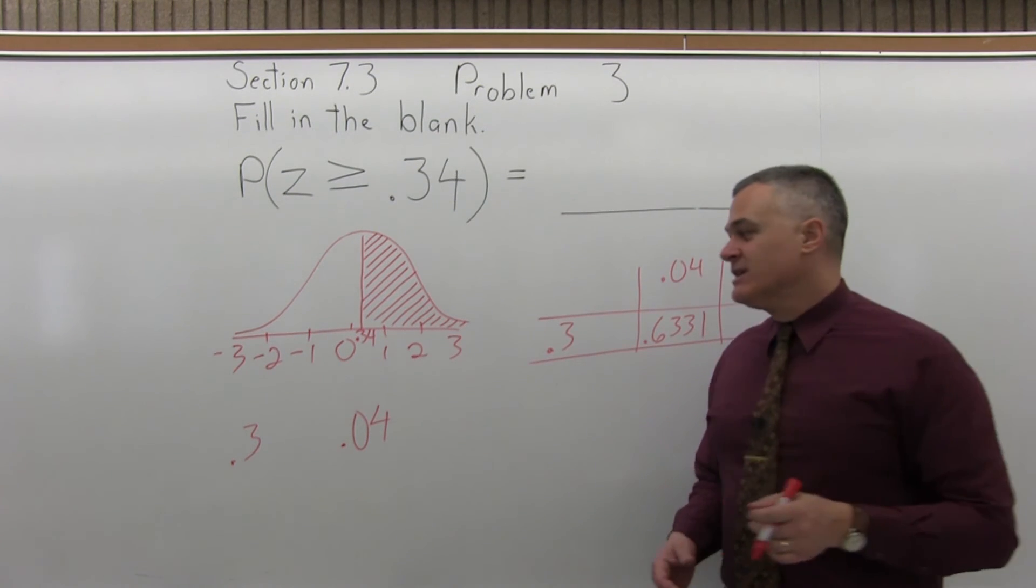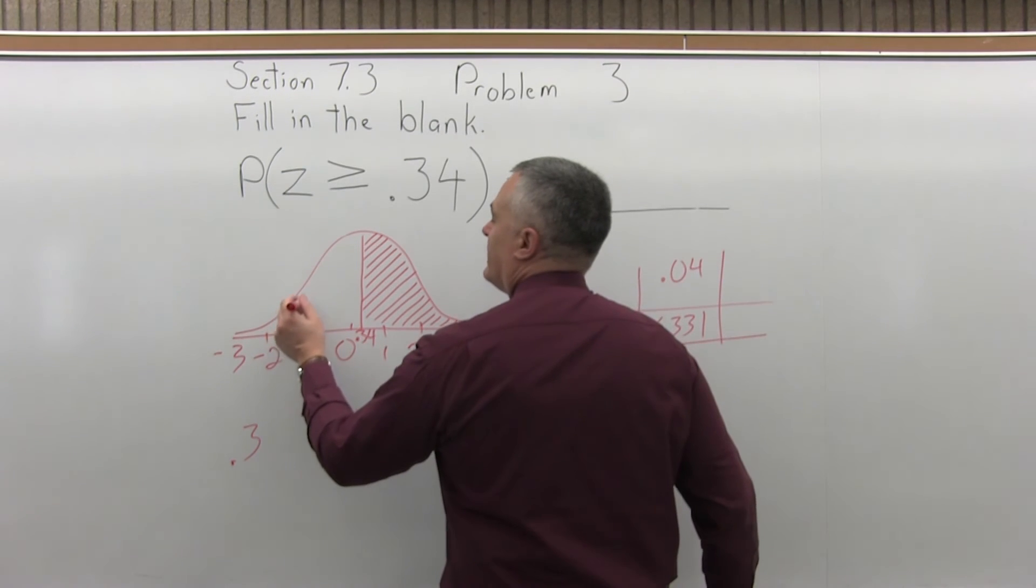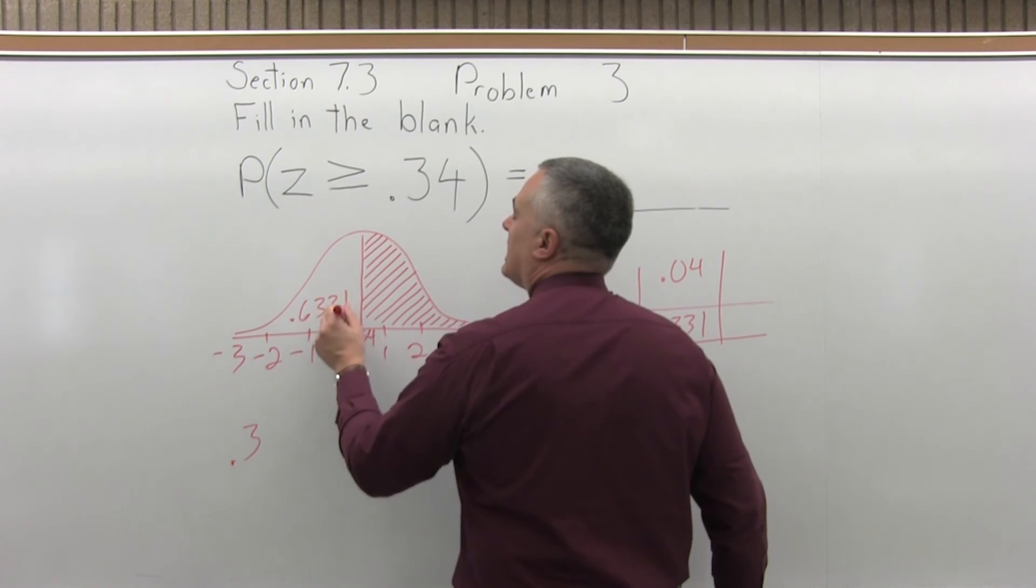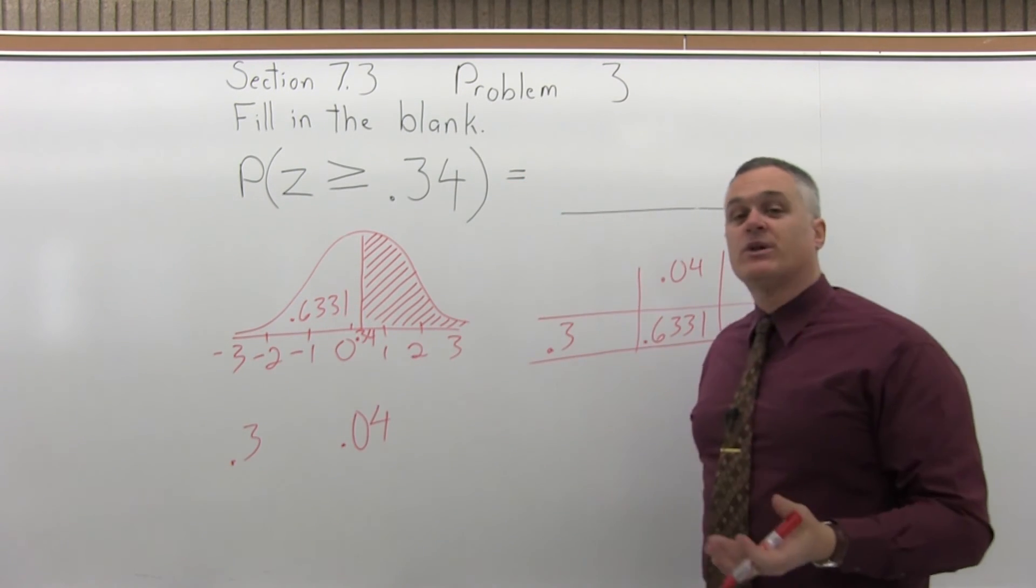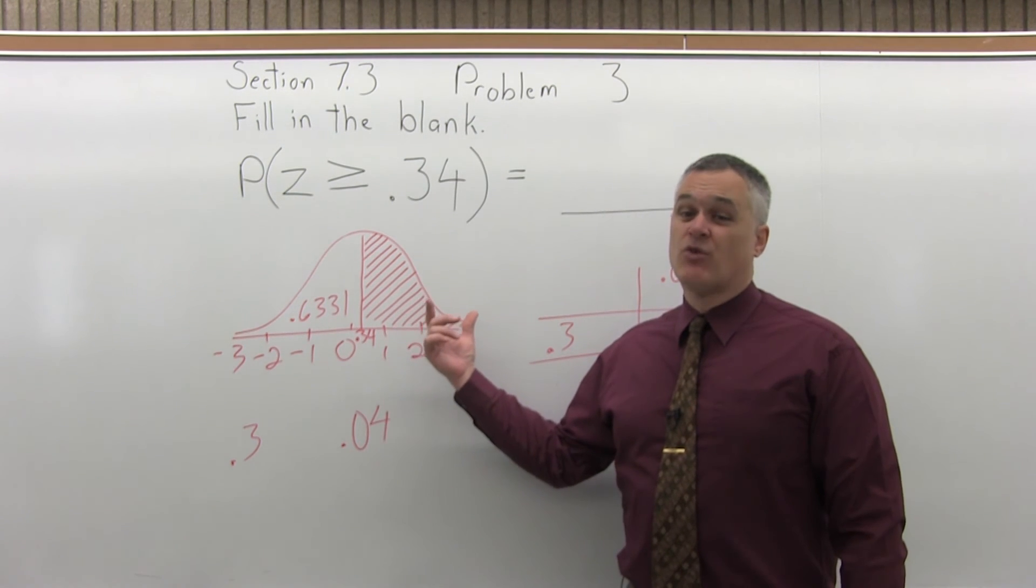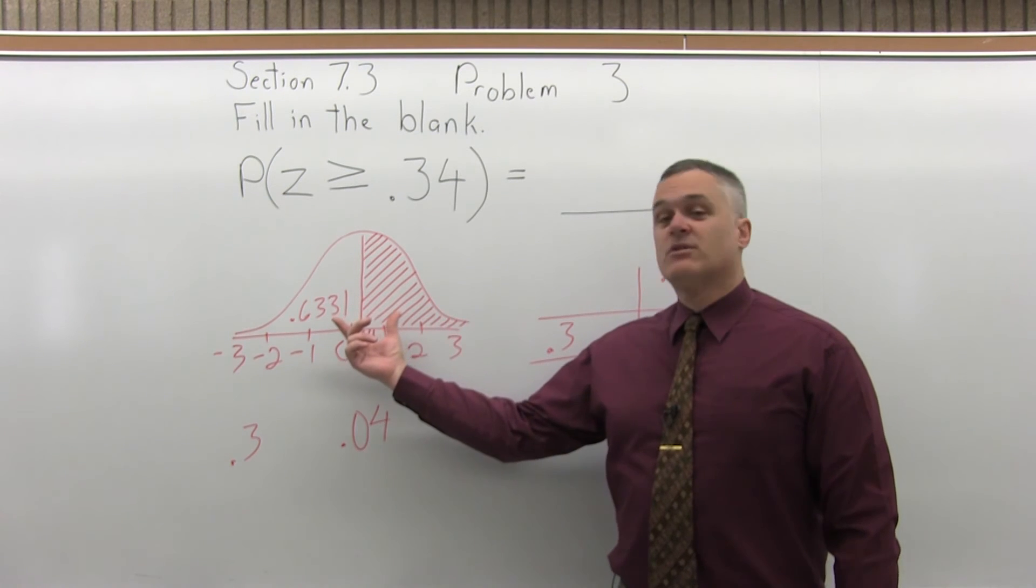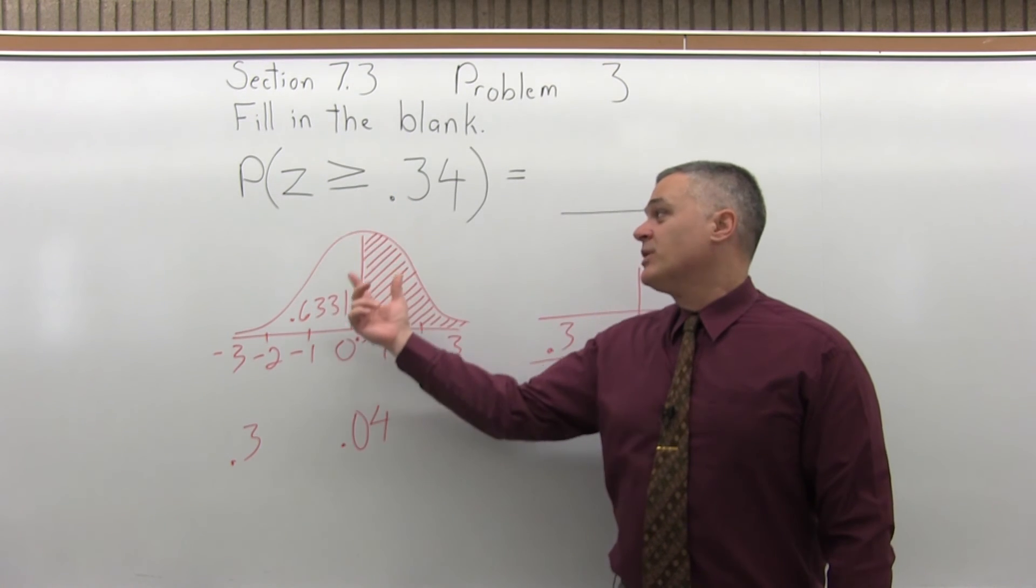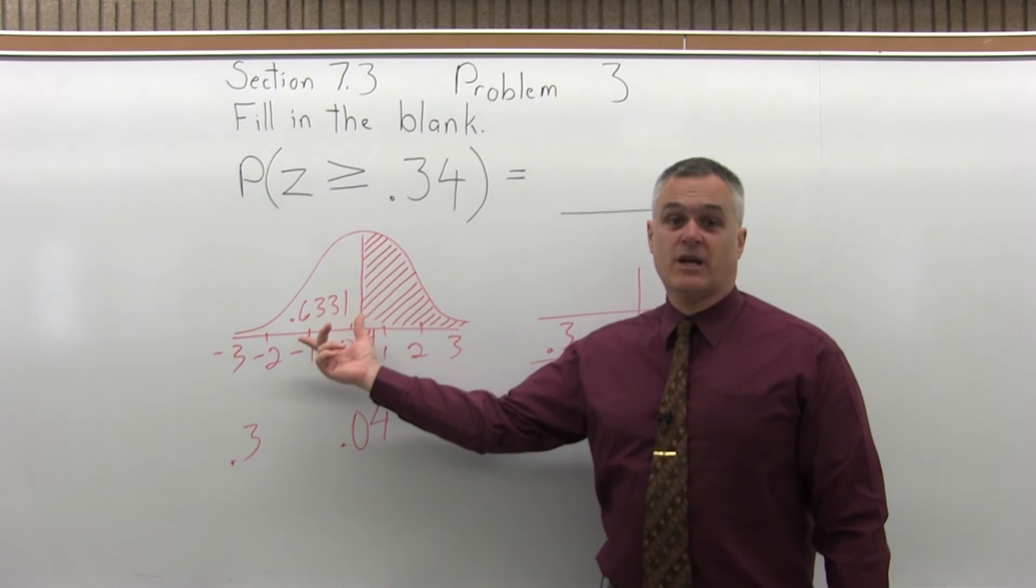Now, that's not the answer. .6331 is the area to the left of what we looked up. That's what the chart is set up to tell us. But for this problem, we want the area to the right. So what you need to remember is for any greater than problem, you have to do 1 minus the chart value.